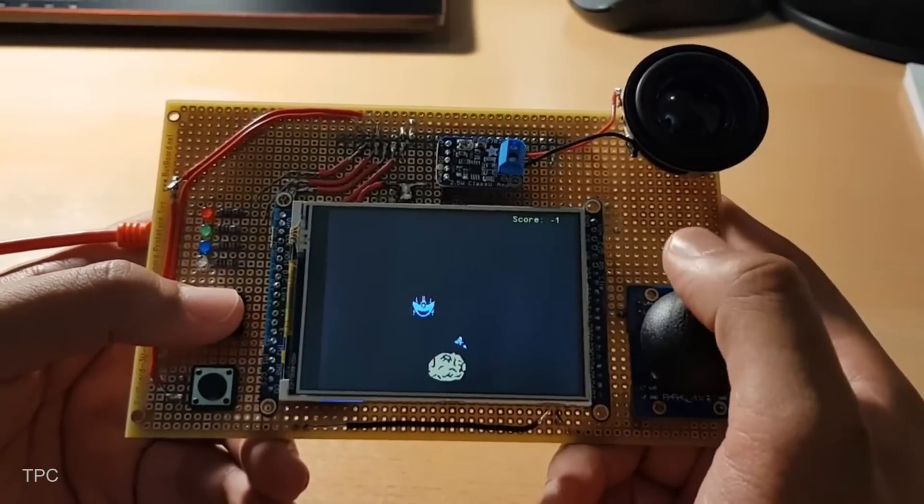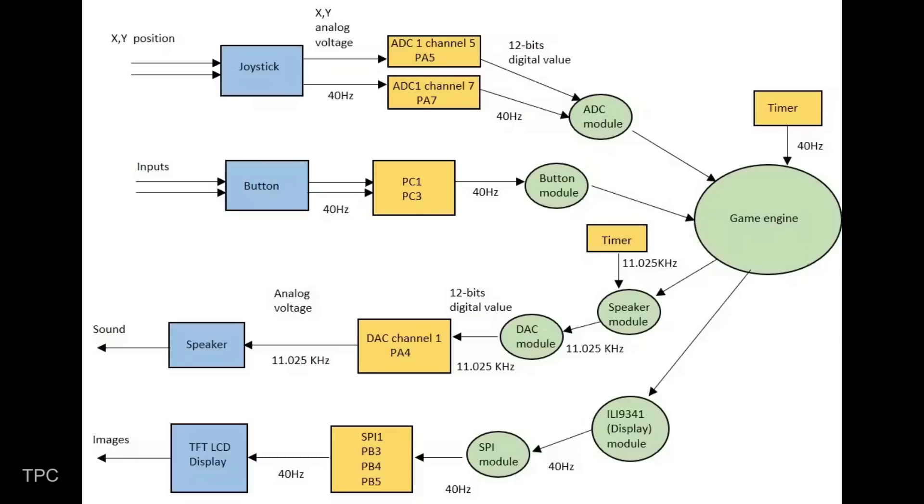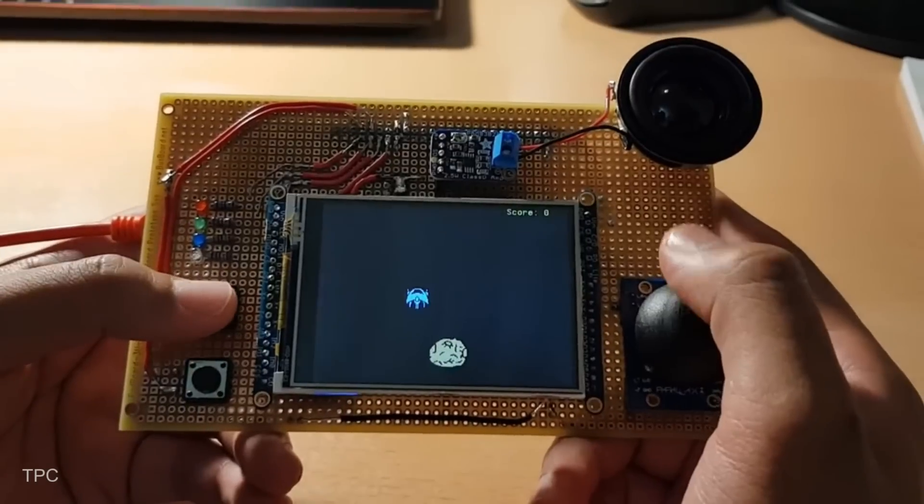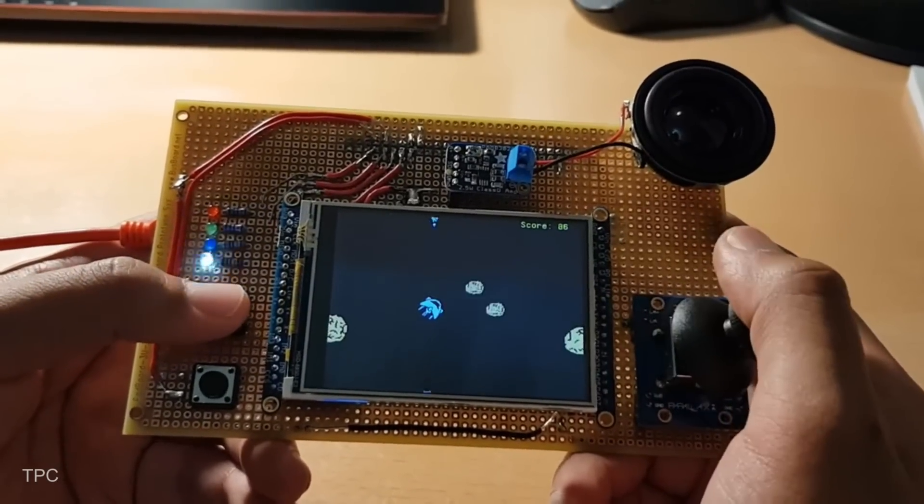The joystick works by detecting changes in voltage through two variable resistors, one for the x-axis and one for the y-axis, which are continuously read by the ADC at a rate of 40 hertz. The two buttons act as digital inputs, with one for firing rockets and the other for game control.